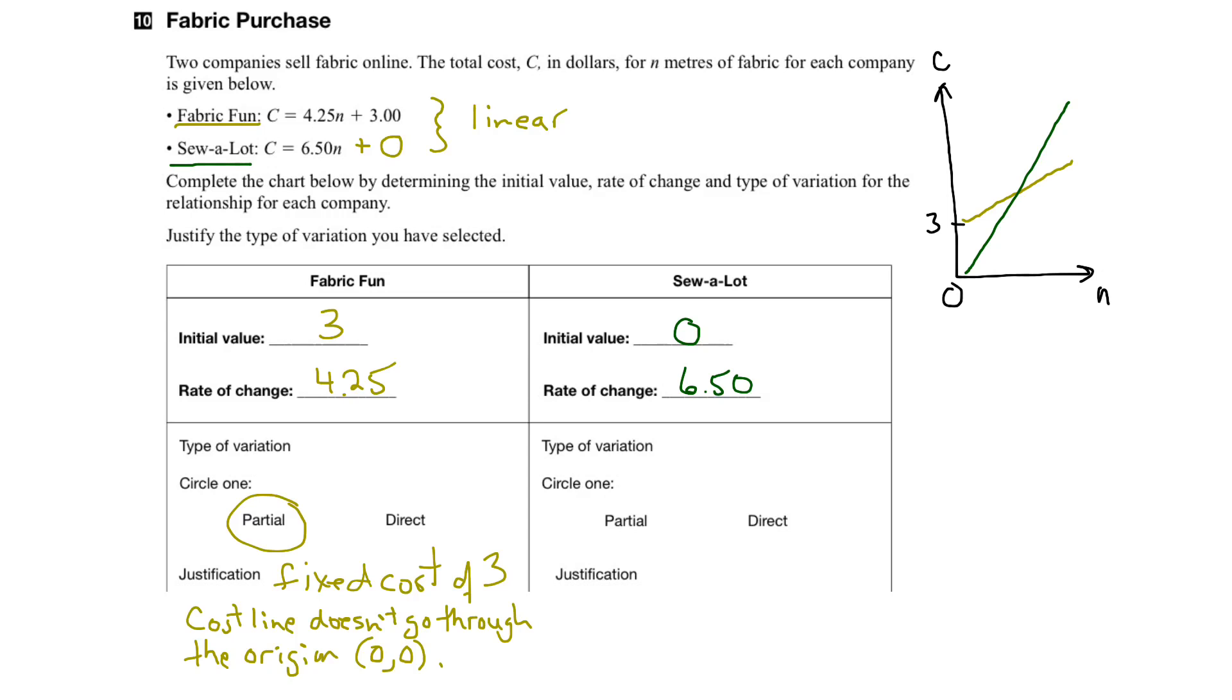In contrast, the Solalot cost line would represent direct variation. And the reason being that the initial value here is zero, or the fixed cost is zero, or that the cost line goes through the origin. So, we can write that here. Cost line goes through the origin.